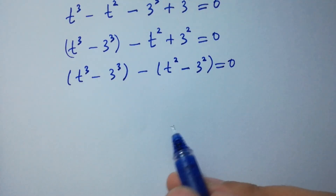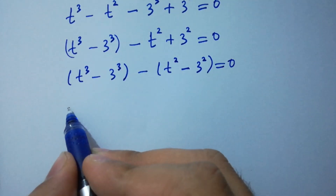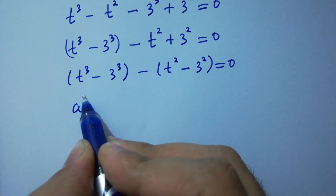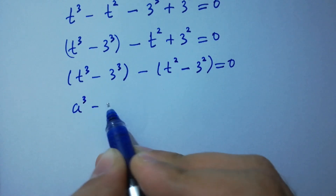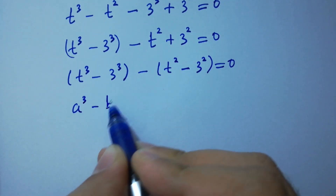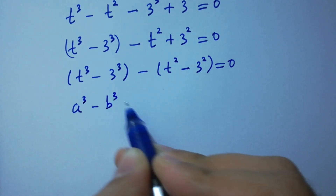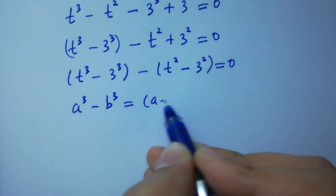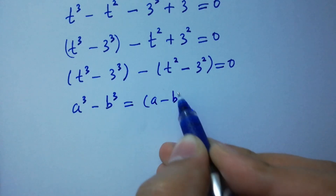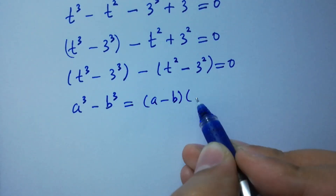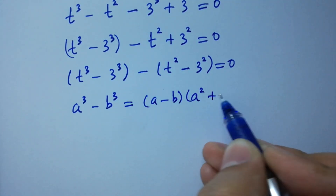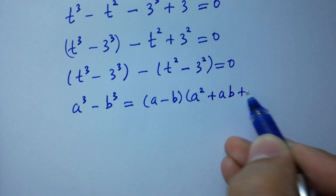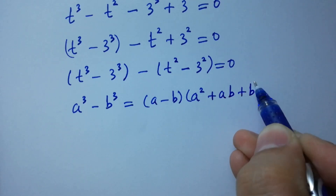As we know, a cubed minus b cubed equals (a minus b)(a squared plus ab plus b squared).